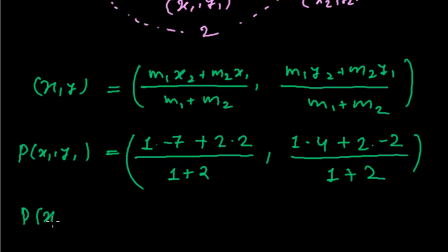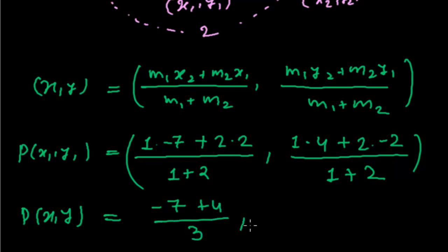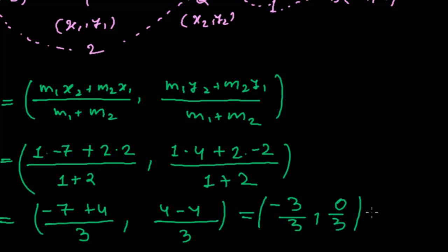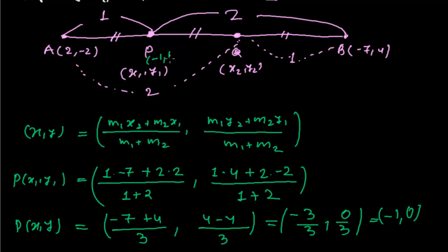Simplifying: (−7 + 4) / 3 = −3/3 = −1 for the x-coordinate, and (4 − 4) / 3 = 0/3 = 0 for the y-coordinate. So P equals minus 1 comma 0.